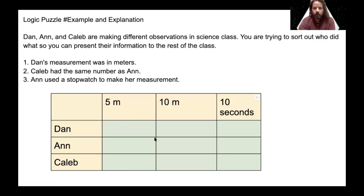So first we're going to have a problem. Dan, Ann, and Caleb are making different observations in science class. You are trying to sort out who did what so you can present their information for the rest of class. Dan, Ann, and Caleb made these measurements and we're trying to figure out who did what and we've got these statements that tell us this.